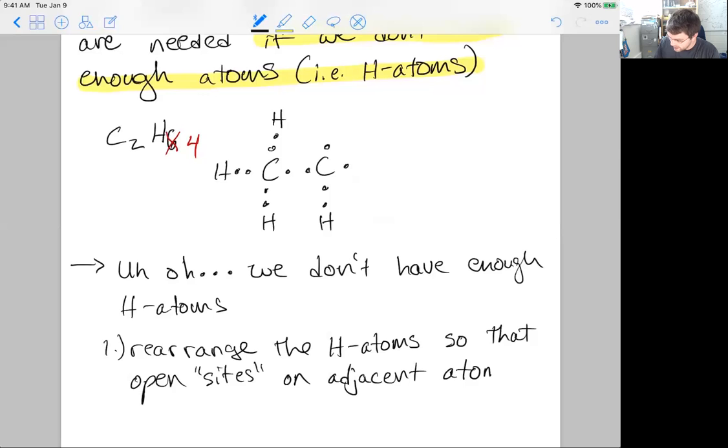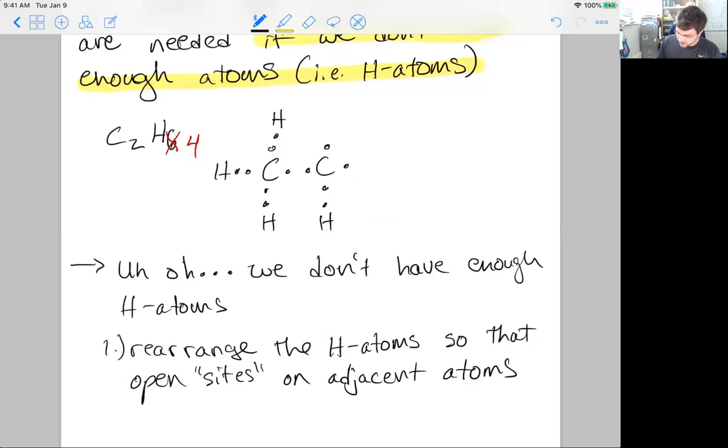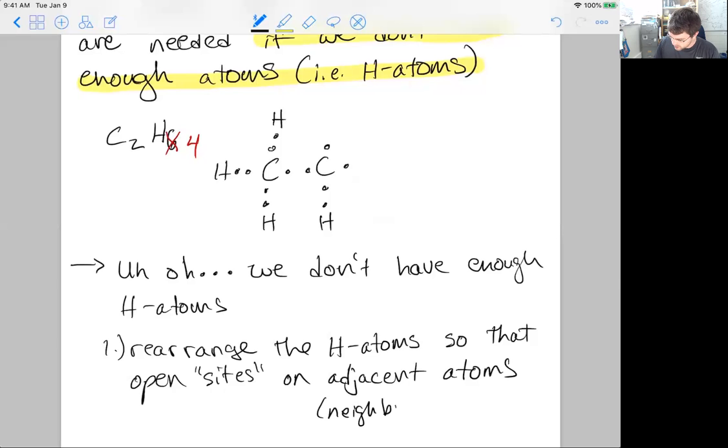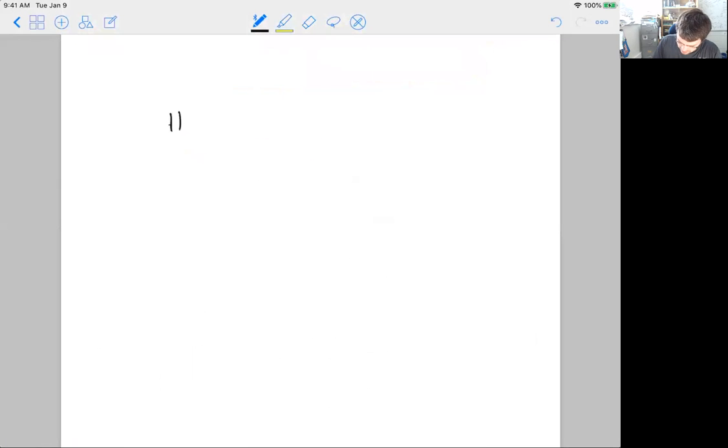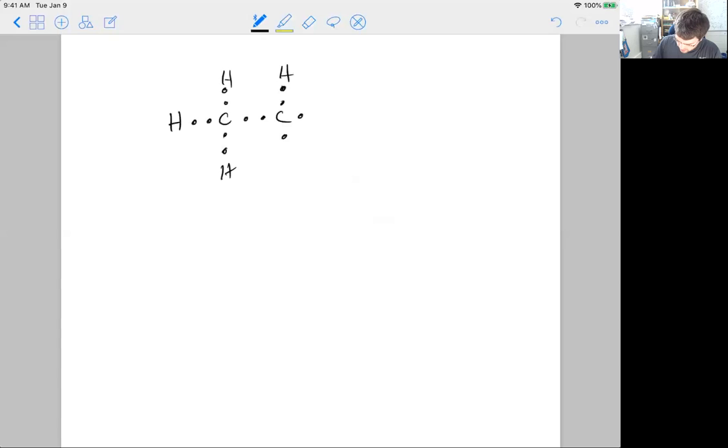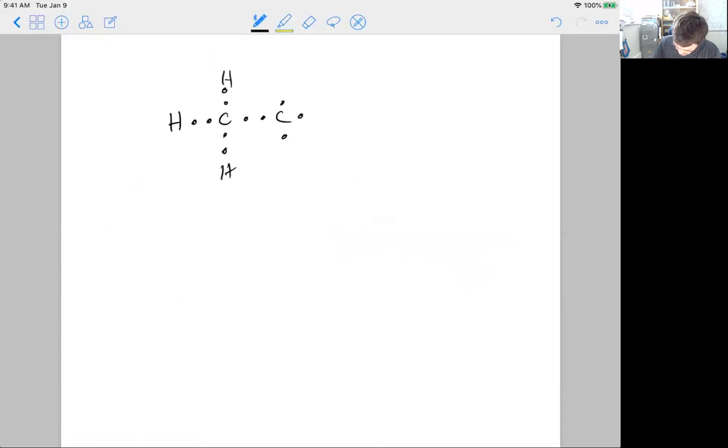We want open sites on adjacent atoms, on atoms that are neighboring each other. Not the same atom, but neighboring atoms. The issue we have right now is in our current Lewis dot structure, we've got two open sites and we need those two open sites to be on neighboring atoms. Right now, they're at the same atom. So let's move one. How do we move open sites? We don't really move open sites, we move H atoms.